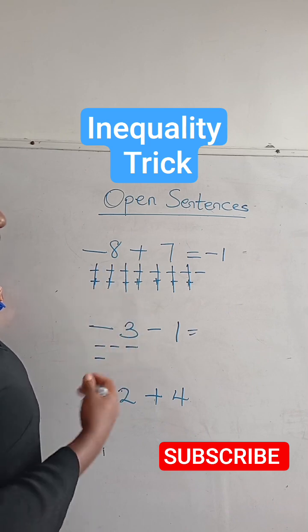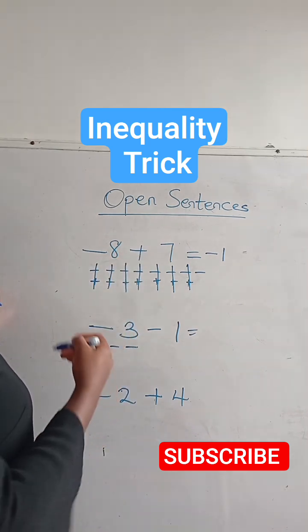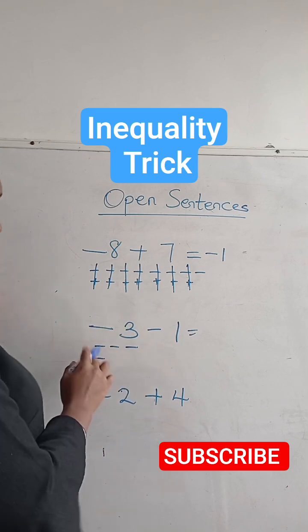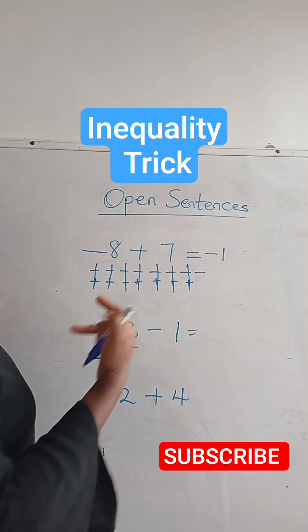Because you do not have separate or opposite signs. So here I'm going to count all together. I have one, two, three, four, so I have four minus. So my answer is going to be minus four.